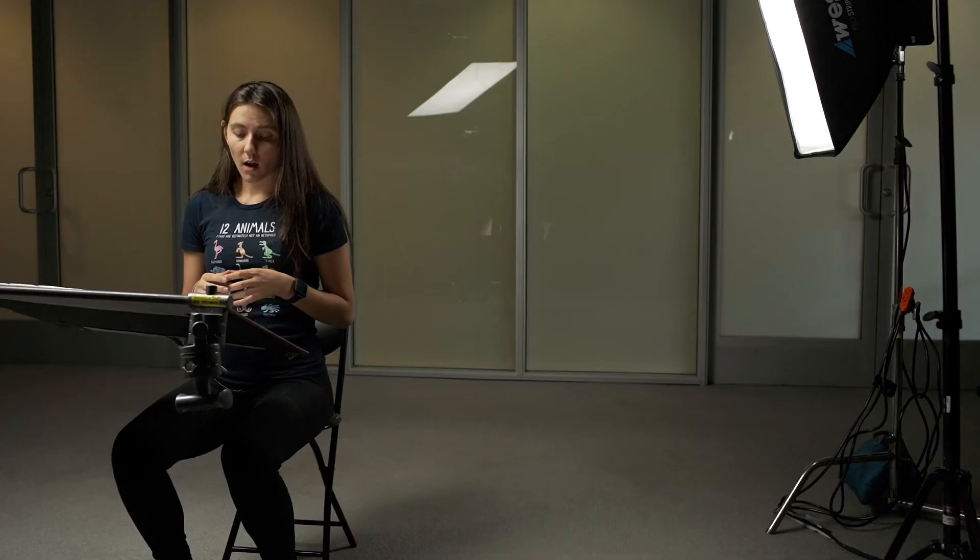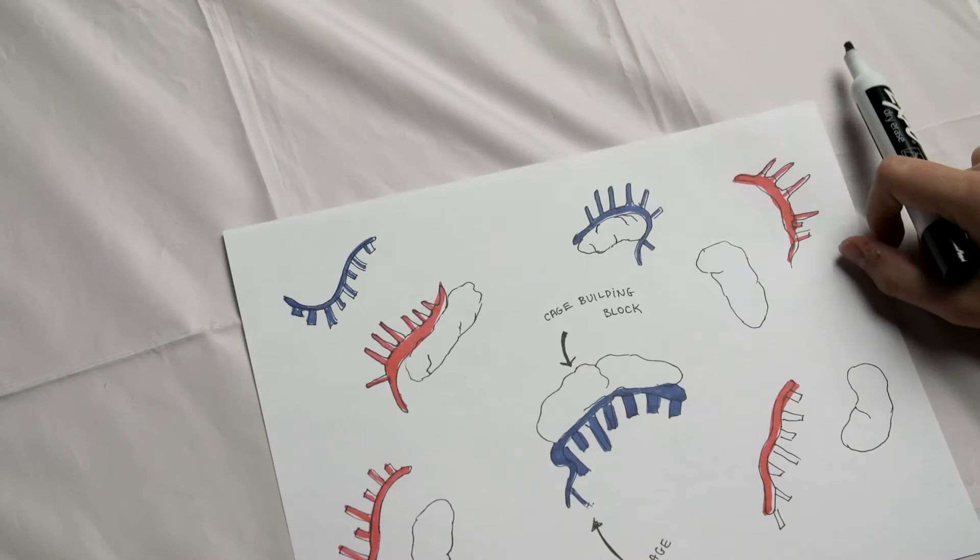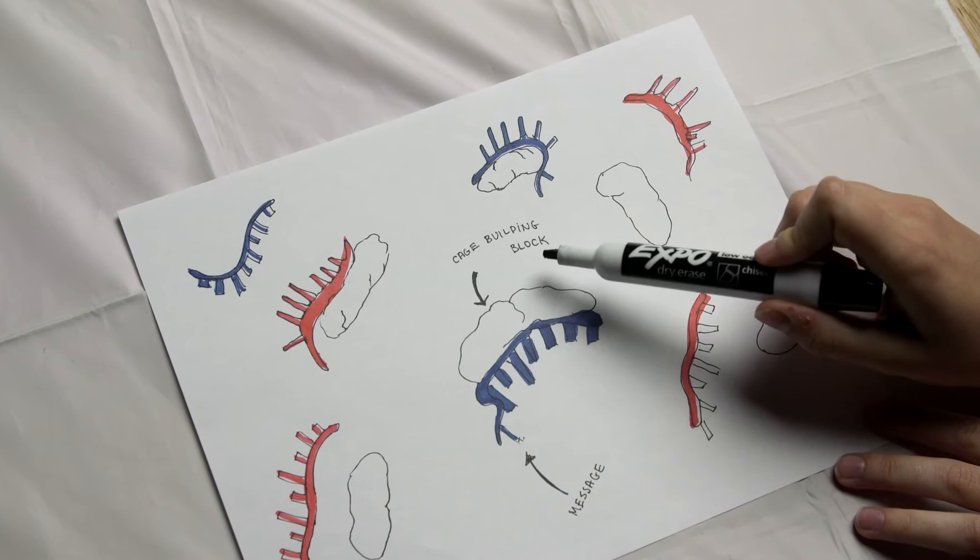Our cells are full of messages called RNA. These messages get produced from the cell's blueprint, DNA, which tells the cells which components need to be built. Scientists recently discovered that there are proteins in our brain called ARC which form cages that traffic these messages from cell to cell. Basically, it's you passing a message to your neighbor.